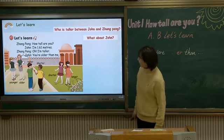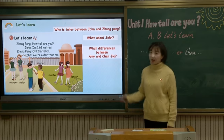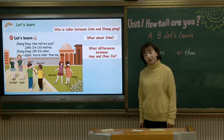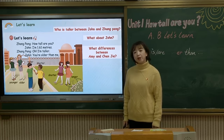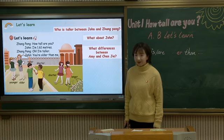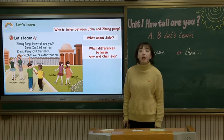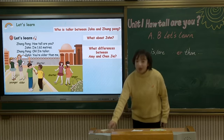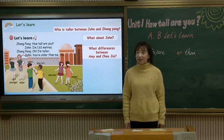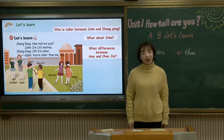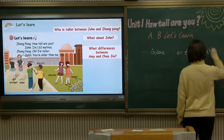Now let's see two girls: Amy and Chen Jie. What difference is there between Amy and Chen Jie? You're right! Amy's skirt is shorter — her skirt is shorter than Chen Jie's. And Chen Jie's skirt is longer — her skirt is longer than Amy's. We can use two people's comparison, and we can also use three people's comparison.